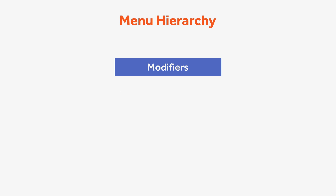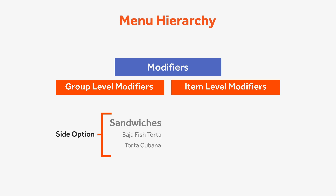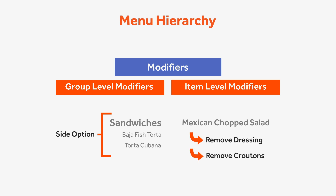Modifiers can be applied at both the group or item level. The side option example could be applied on the group level if all items in your sandwich group have the same side options. Modifier groups can also be applied in the same way to subgroups. An example of applying modifier groups at the item level could be if you'd like guests to adjust the ingredients of a specific item, such as removing dressing or croutons from a salad.